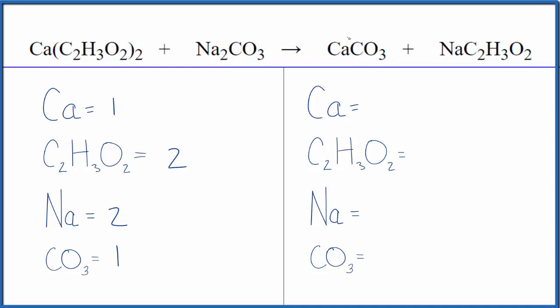On the product side we have one calcium, one acetate ion, one sodium, and one carbonate. You can see this is a lot neater - it's easy to see what we need to do. You get the same answer either way, this is just faster. I can see that I need two acetates and two sodiums.